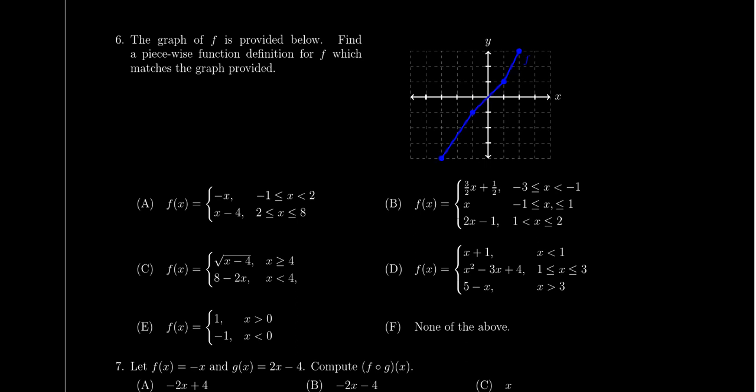So you'll notice like choice A, this is a linear function. This is a linear function, but there's only one switch. It goes from negative one to two and then two to eight. I need three different pieces. Thus, I need two switches for it. So it can't be choice A. There's not enough pieces.